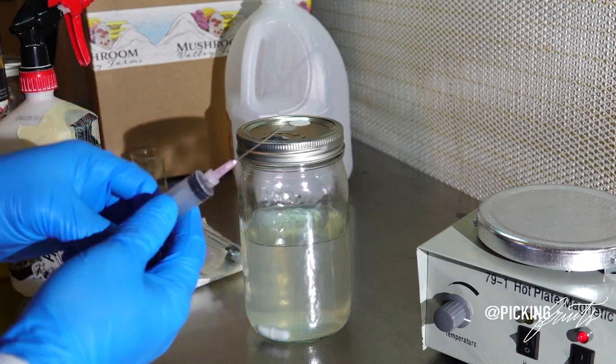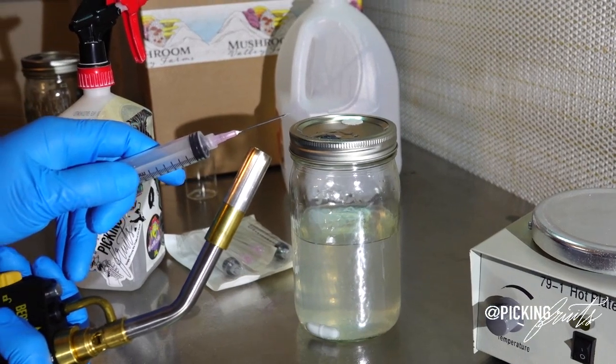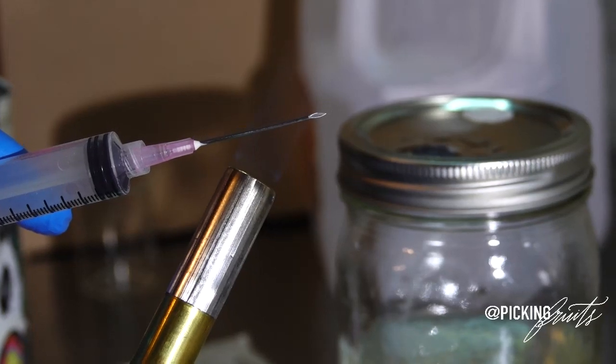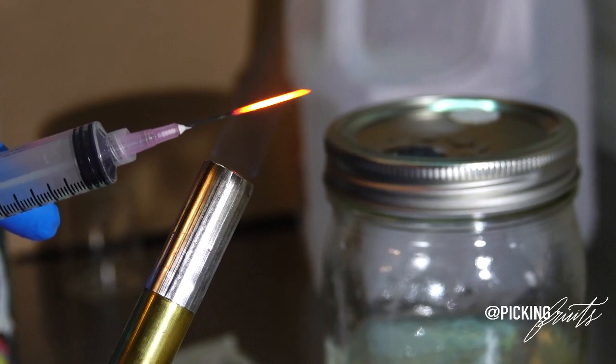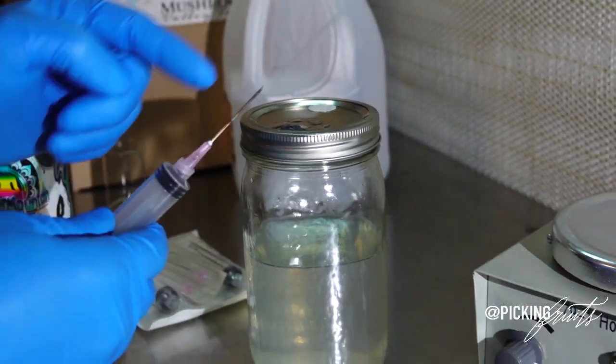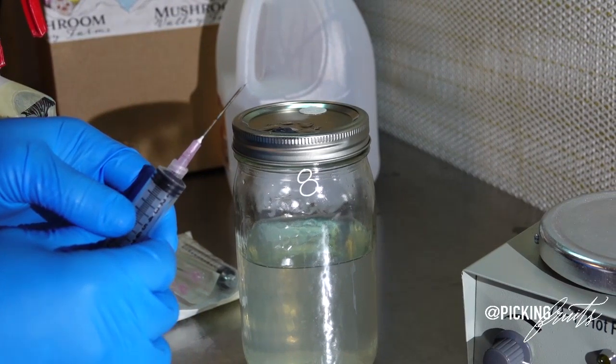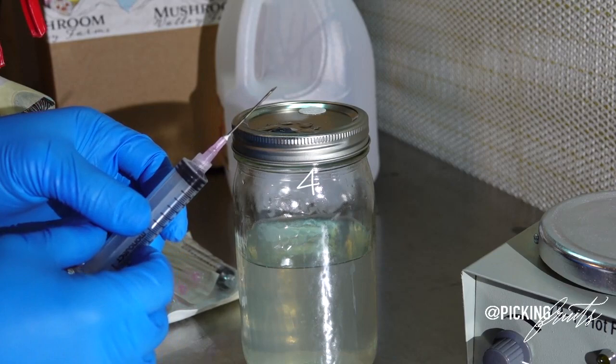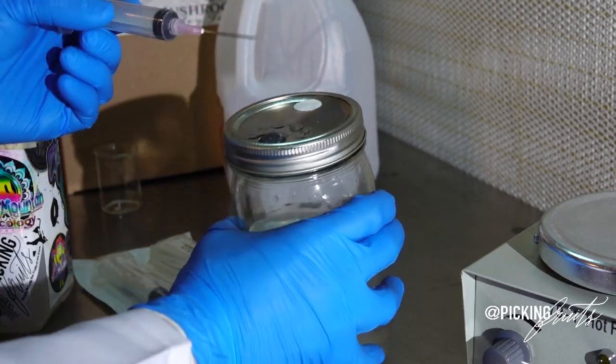So using a clean needle and syringe, I'm going to do the same thing. I'm going to flame sterilize it for two seconds. And in this case, we have nothing inside of the syringe to actually cool down our needle. So we are going to wait a few more seconds until it is not red hot anymore. And we'll just count down from 10, 9, 8, 7, 6, 5, 4, 3, 2, 1. And it should be cool enough at this point.